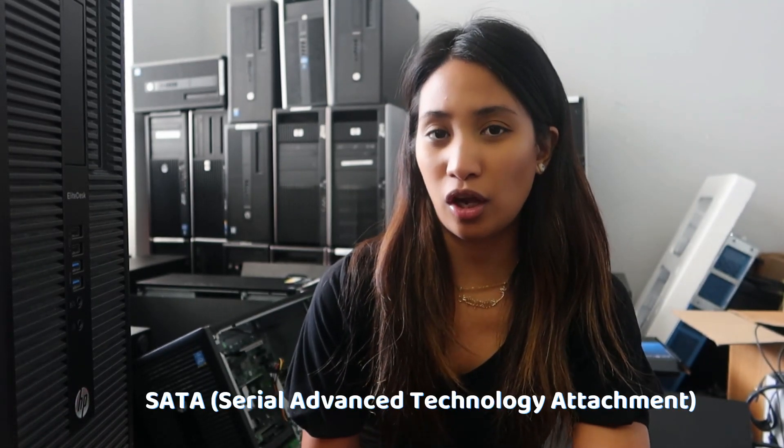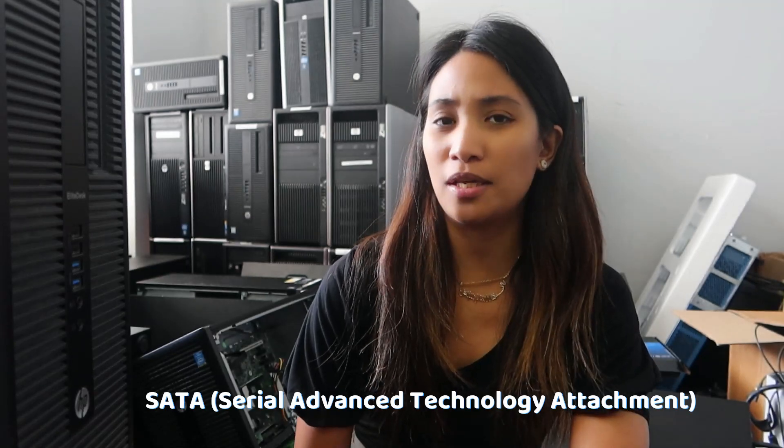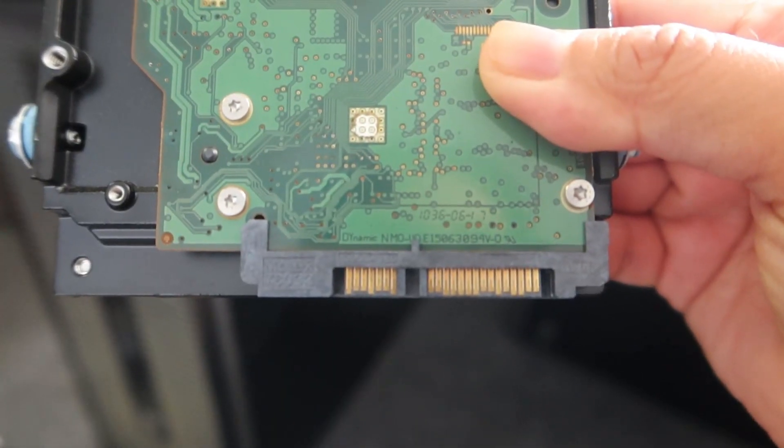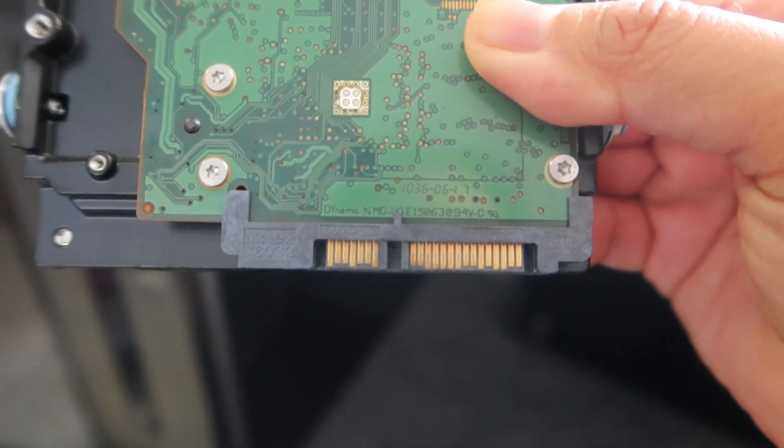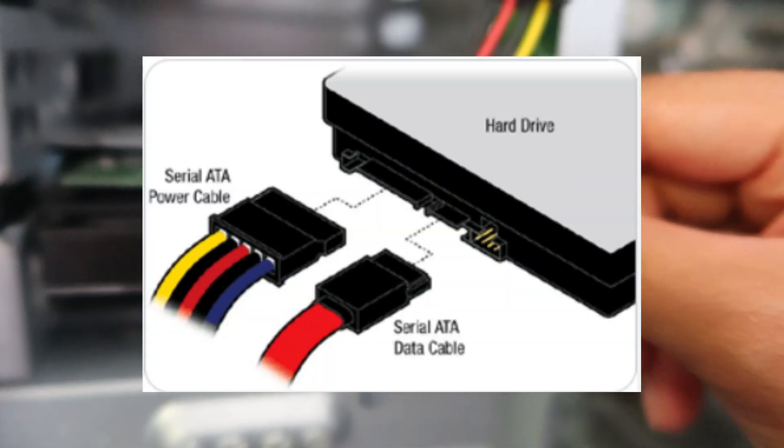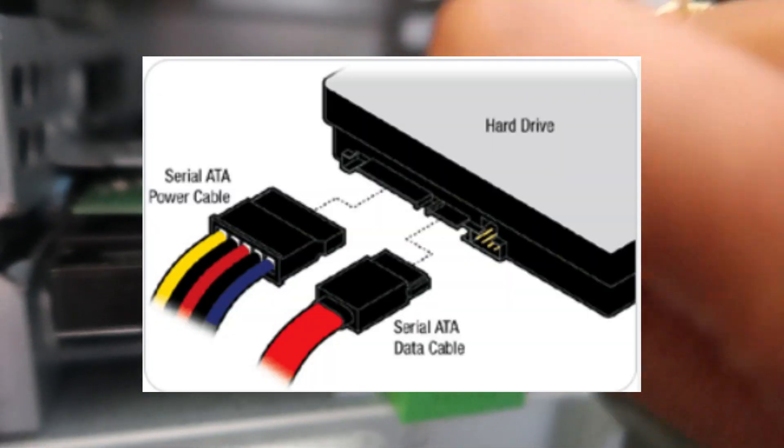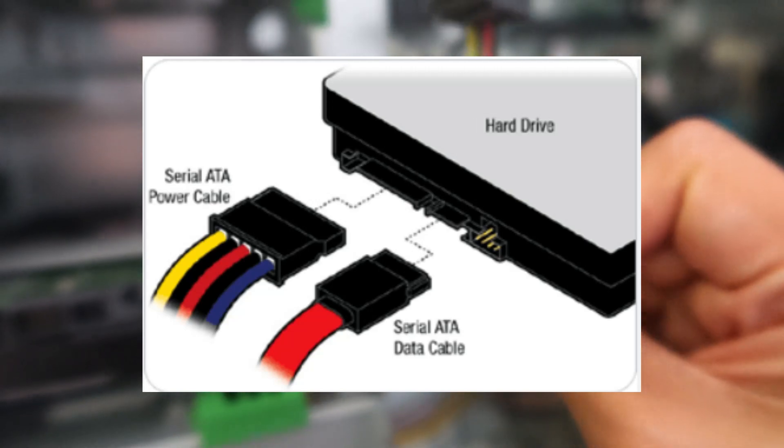Another interface is SATA — Serial Advanced Technology Attachment — which replaced the parallel one. It's more common for desktops and older hard drives, and it uses thinner cables compared to the parallel interface. Here's what a SATA interface looks like on a hard drive, and this is the SATA cable. There are two different connectors: one for power and one for data.